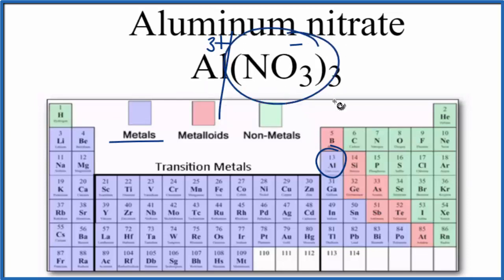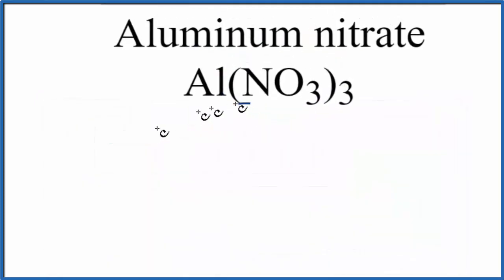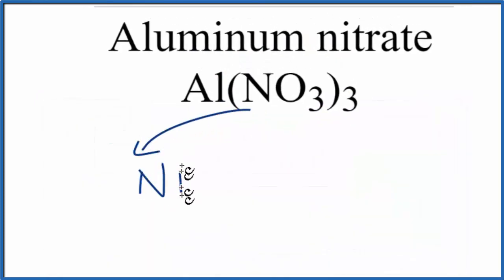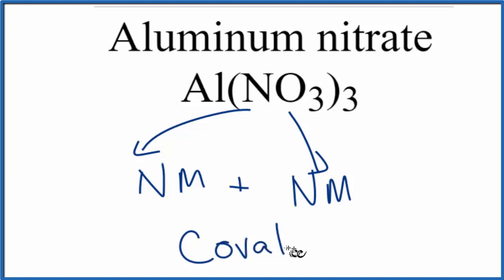Let's talk briefly about the nitrate ion. Nitrogen is a nonmetal, and oxygen is also a nonmetal. When we have a nonmetal and a nonmetal, that gives us a covalent bond. It's also called a molecular bond. So the bond between the nitrogen and the oxygens, that's covalent.